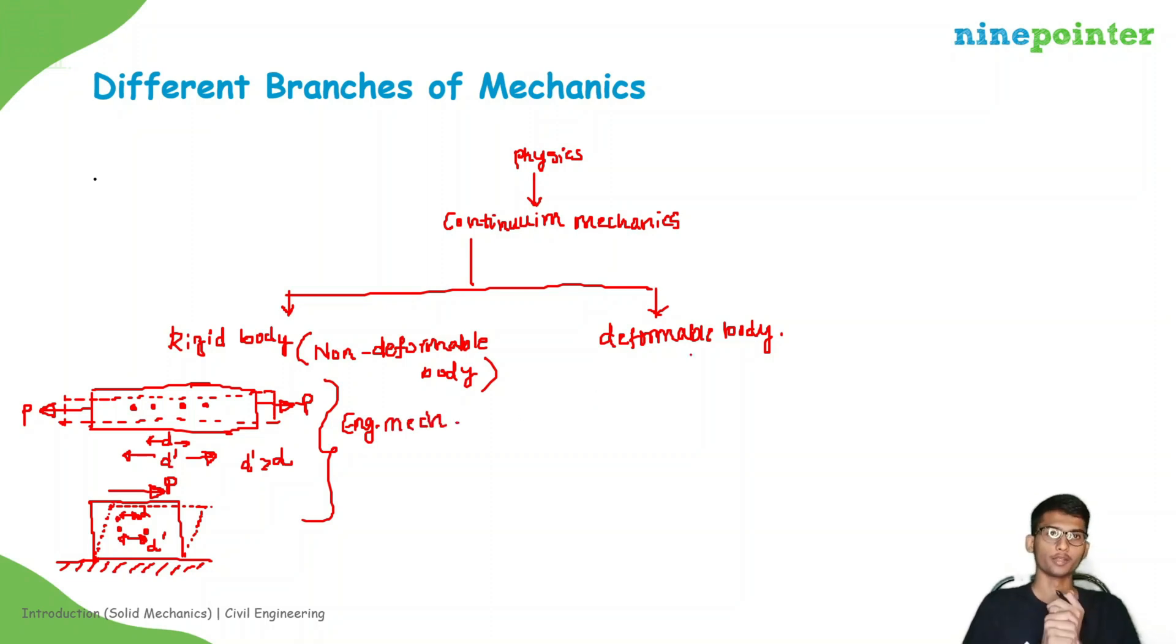Now let us go to deformable body. The deformable body is a body which deforms under the action of the load. It changes either its shape or size under the action of load. In deformable body there are two types: one is solid deformable body, another is fluid deformable body.